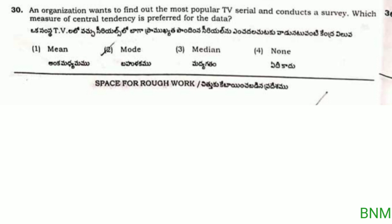Next: an organization wants to find out the most popular TV serial and conducts a survey. Which measure of central tendency is preferred for this data? Since we are looking for the most repeated value, the mode is preferred. So the second option — mode — is the right answer.